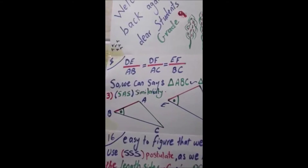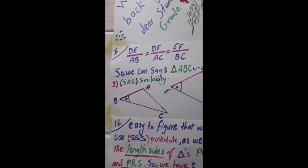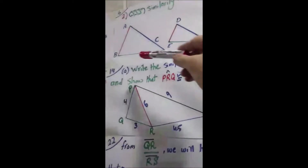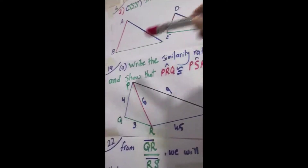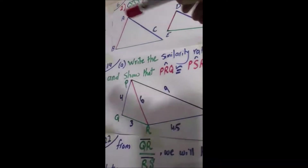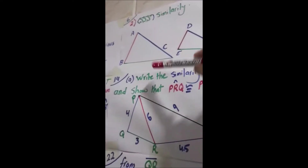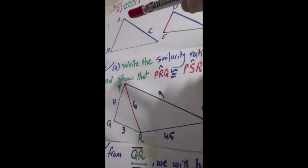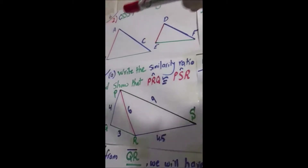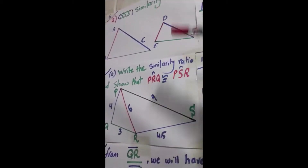Or we can say DE/AB = DF/AC = EF/BC. You are free — either way gives the same result. But if you start with one triangle, you must continue with the same triangle. So if you start AB/DE, you continue: AC/DF = BC/EF. You cannot mix — that would be wrong.